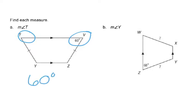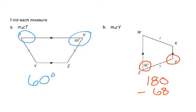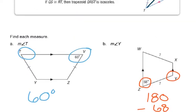For problem B, you're looking for angle Y, but the given angle is not along the same parallel base — it's on the opposite base. Those two angles will be supplementary. To find angle Y, you do 180 minus 68, which gives you 112. So the measurement of angle Y is 112 degrees.